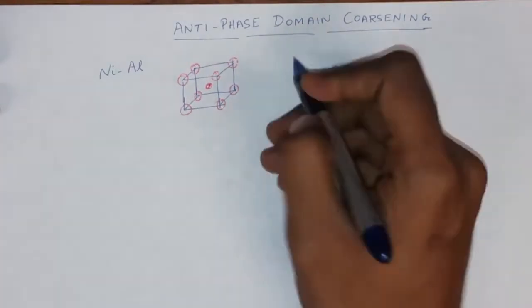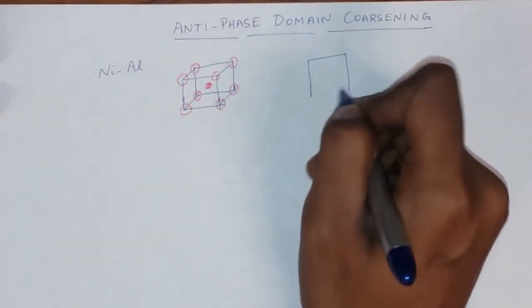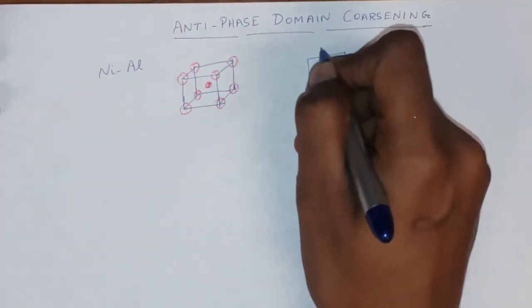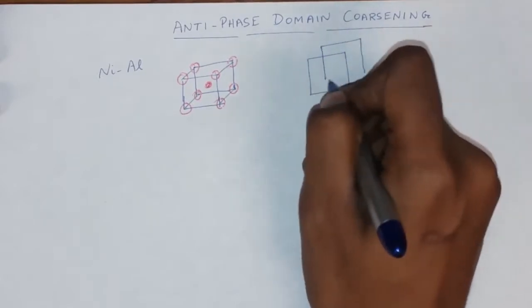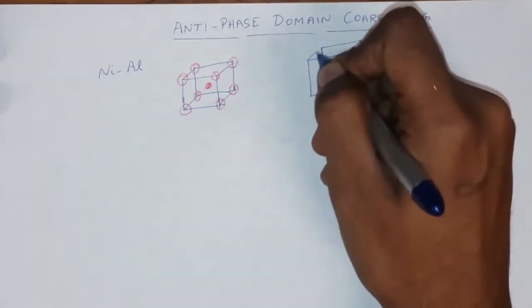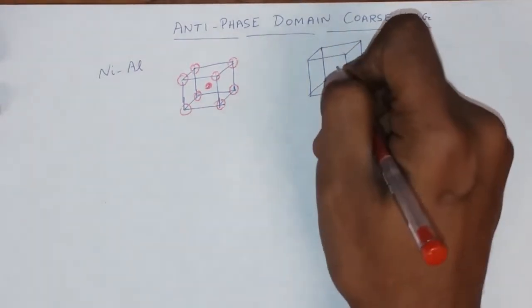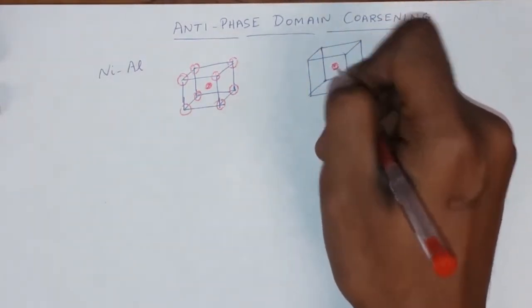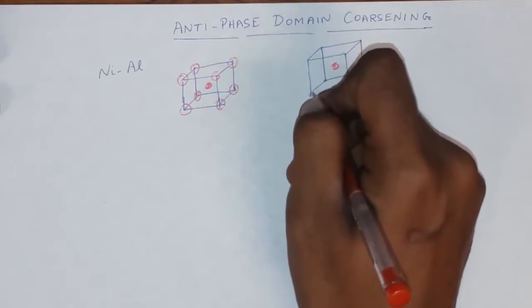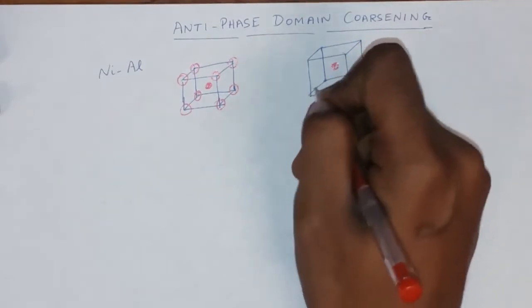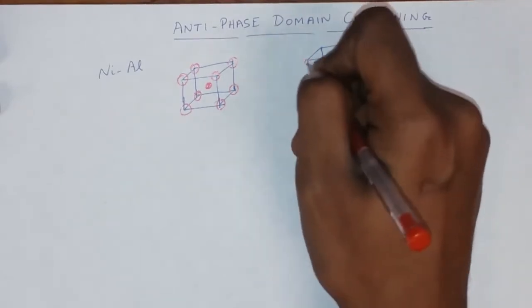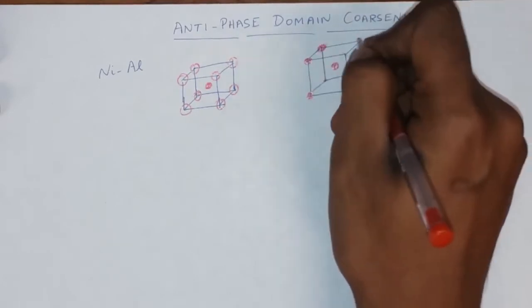There would also be another structure, another unit cell where these positions are slipped in that now the aluminium atom occupies the centre, the body centre, while the nickel atoms occupy the corners.